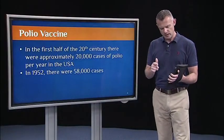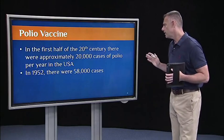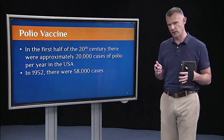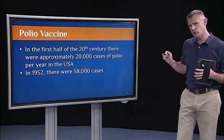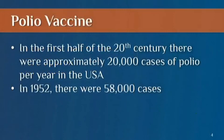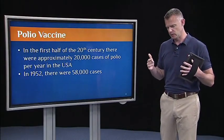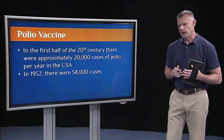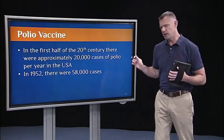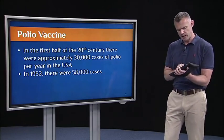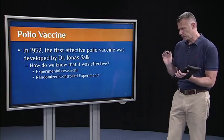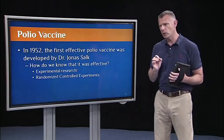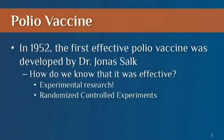In the first half of the 20th century, there were approximately 20,000 cases of polio per year in the USA. In 1952 was a particularly bad year — there were 58,000 cases just in that one year alone. Polio was a very debilitating and frightening disease. It happened among children of all backgrounds, and some years, as noted in 1952, were particularly bad and worrying. So in 1952, the first effective polio vaccine was developed by Dr. Jonas Salk.